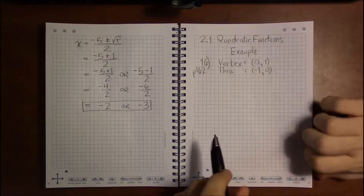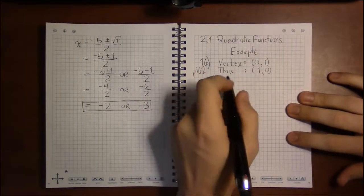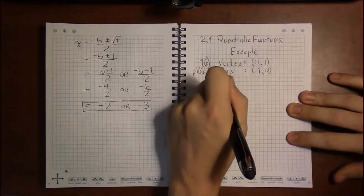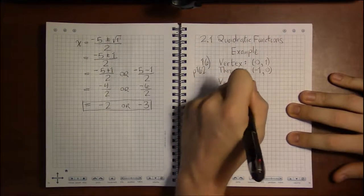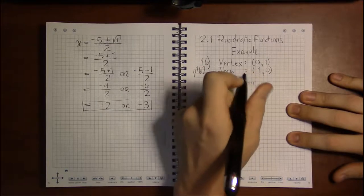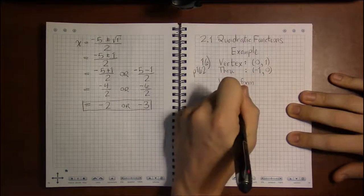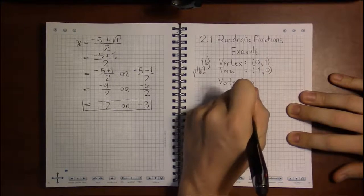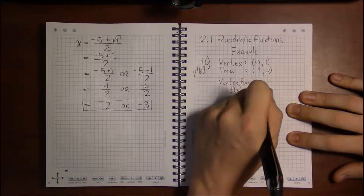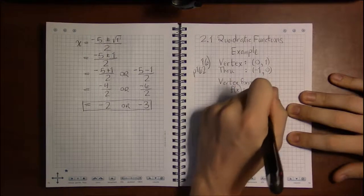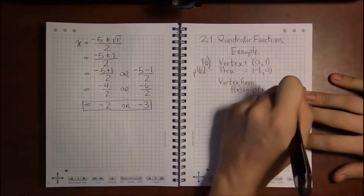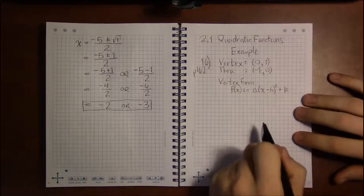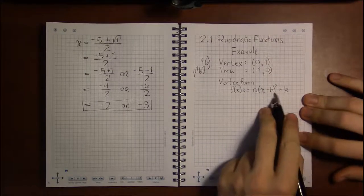So we're going to start with the vertex form of a quadratic, which is that y or f(x), depending on what you prefer, is a times (x - h) squared plus k. This is the nice way to do it because h and k are given to us.